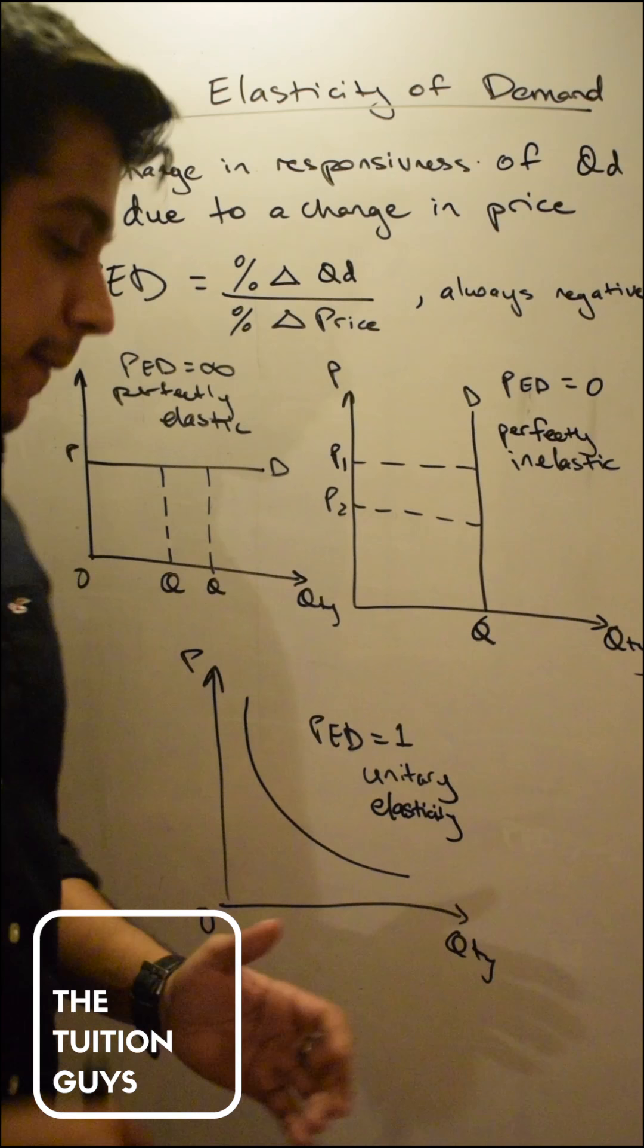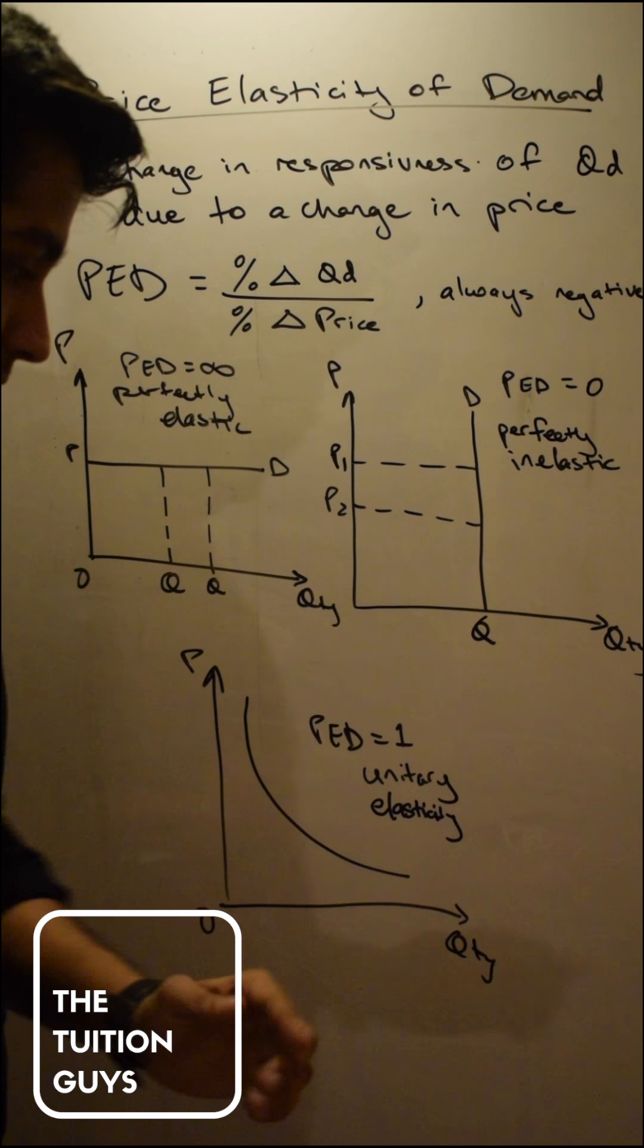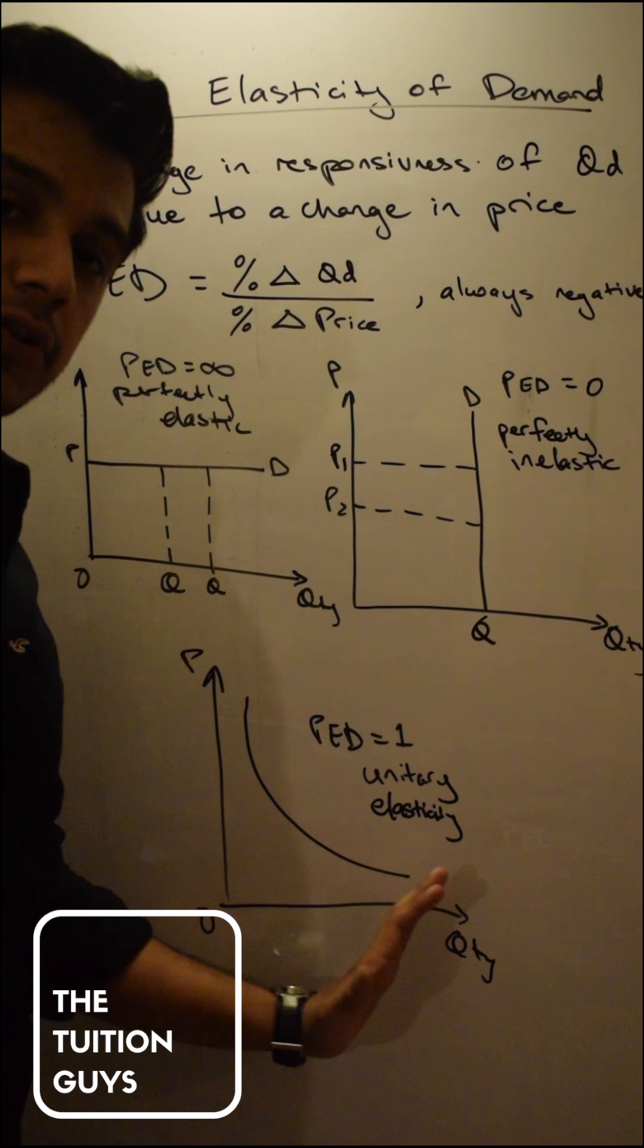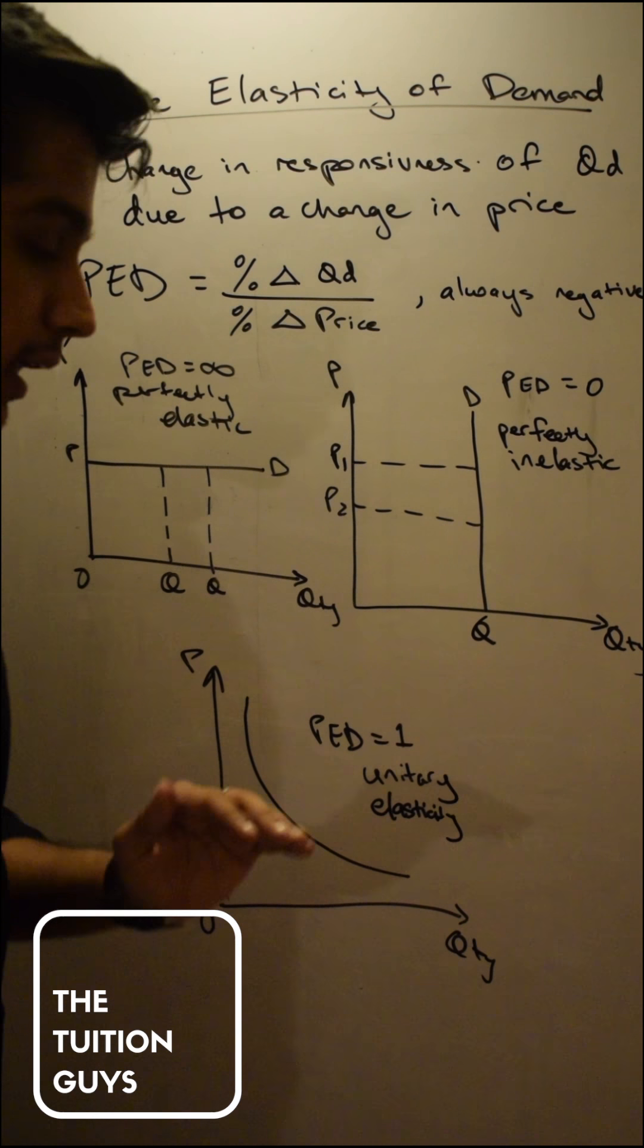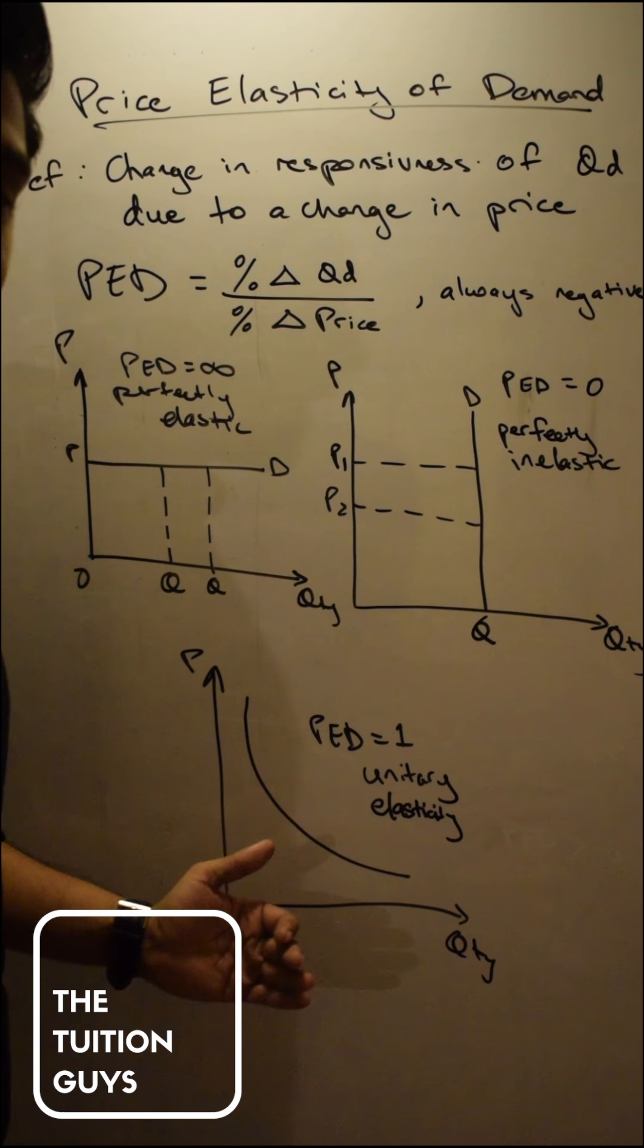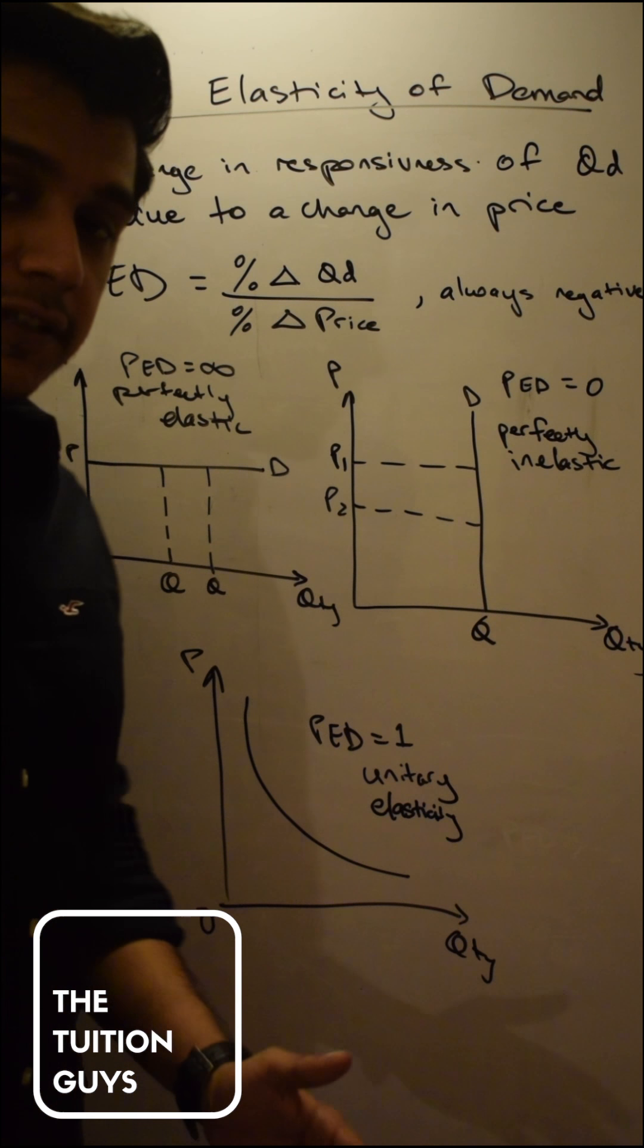And the last form of price elasticity demand is a unitary elasticity. Whereas PED is equal to one, and that means that the proportionate change in price is going to be equal to the proportionate change in quantity demanded. Again, the proportionate change in price, whether that's up or down, is going to be exactly the proportionate change in quantity demanded, whether that's up or down.